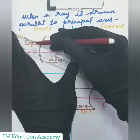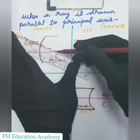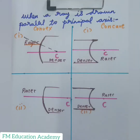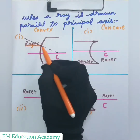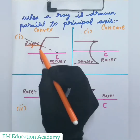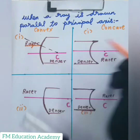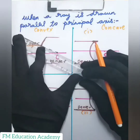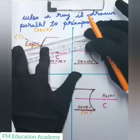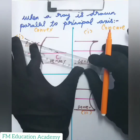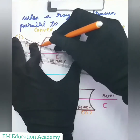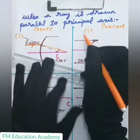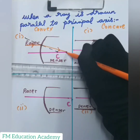We know that a normal is a ray which passes from the center of curvature to any point on the lens, so this dashed line is my normal. Whenever a ray passes from rarer medium to denser medium, it bends towards the normal — it will not bend away from the normal. So this is how my diagram is: the ray bends towards the normal and meets the principal axis at this particular point.